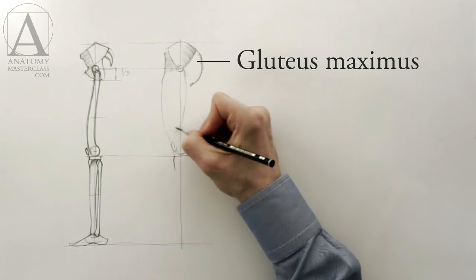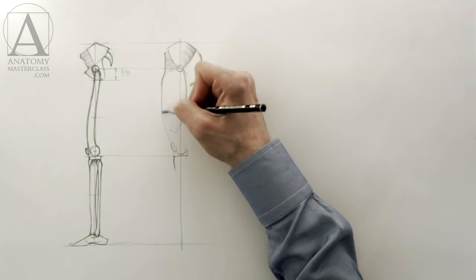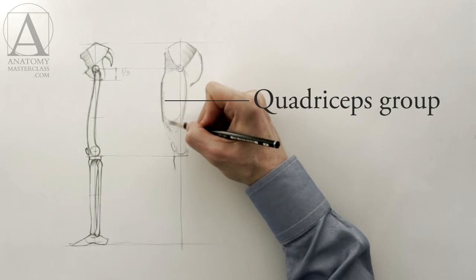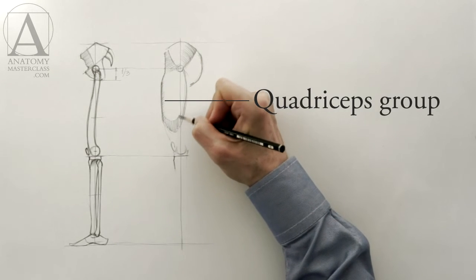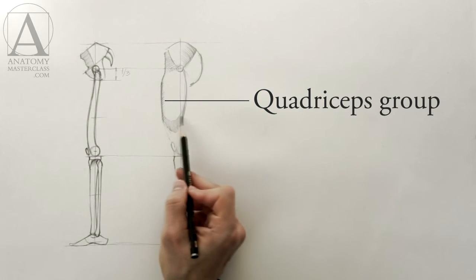The buttock part is defined as the gluteus maximus muscle. The front portion of the thigh is occupied by the quadriceps group. The word quadriceps means four heads in Latin.